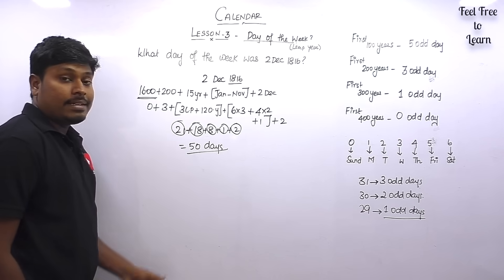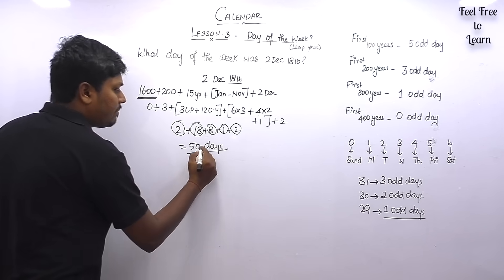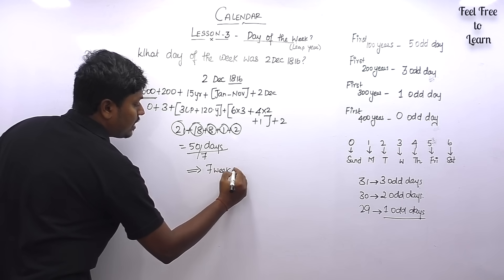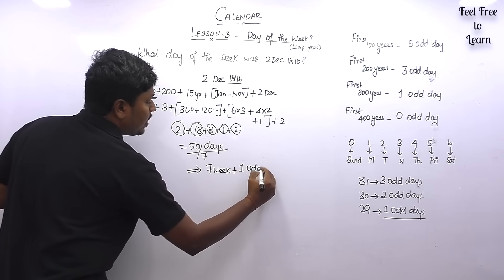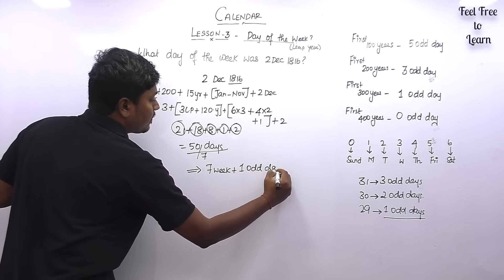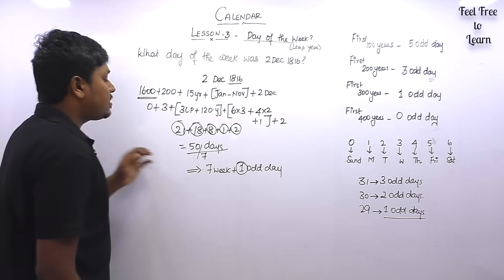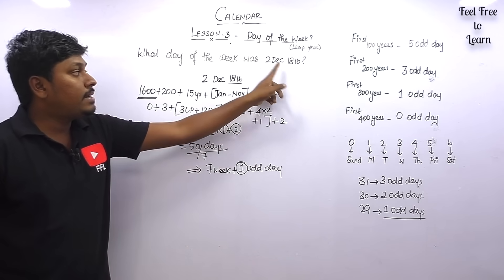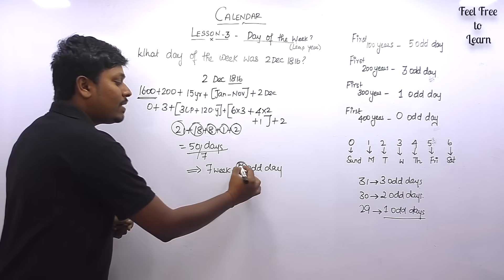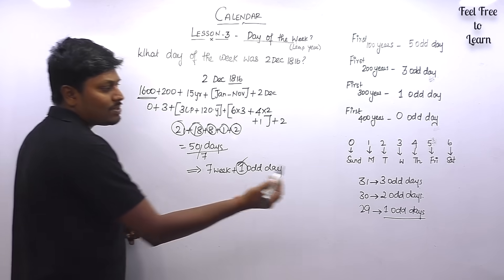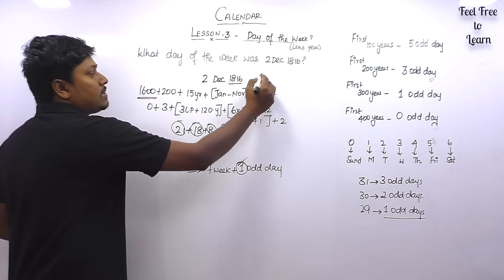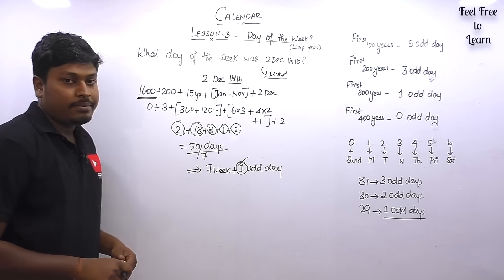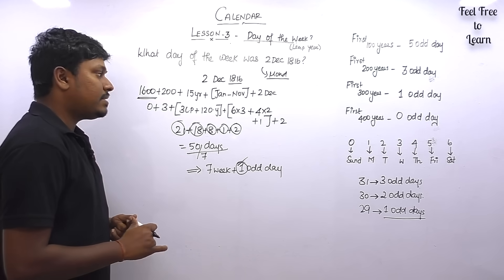Converting 50 days to weeks and odd days: divide by 7. 7 × 7 = 49, leaving 1 odd day. So 2nd December 1816 falls on the 1st odd day, which is Monday. Monday is the answer for question 5.